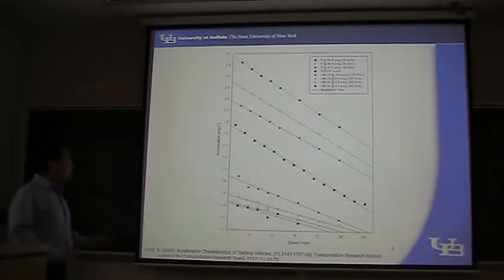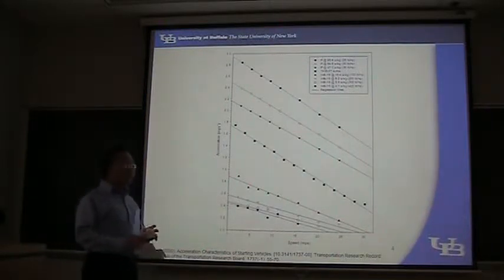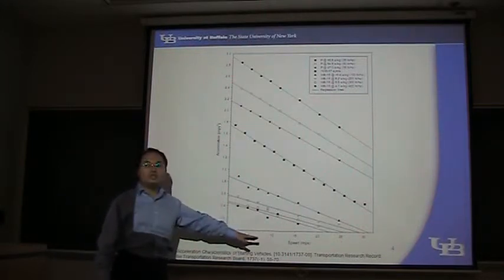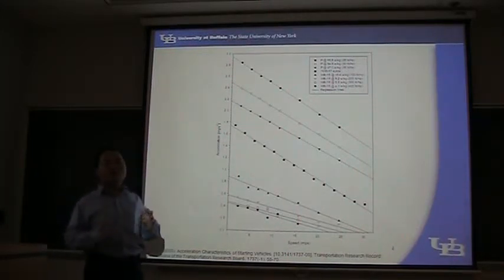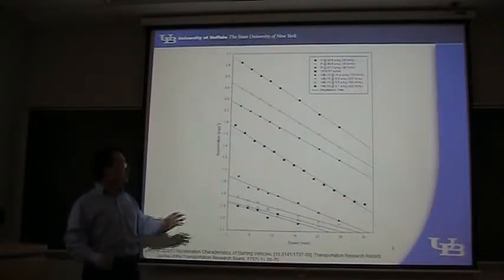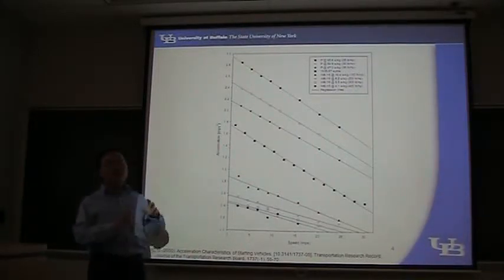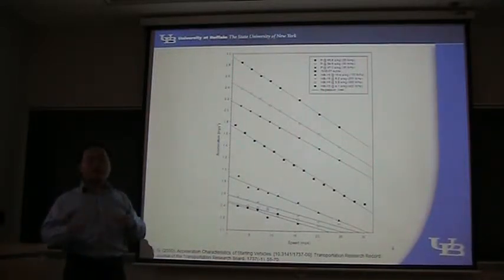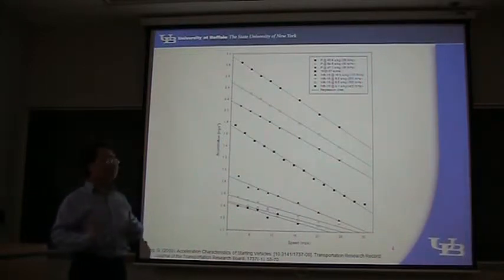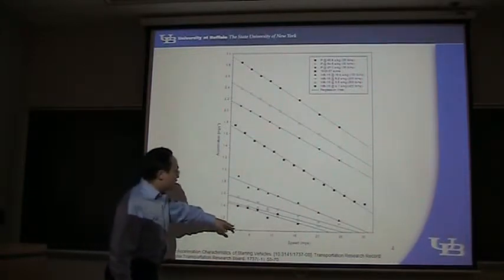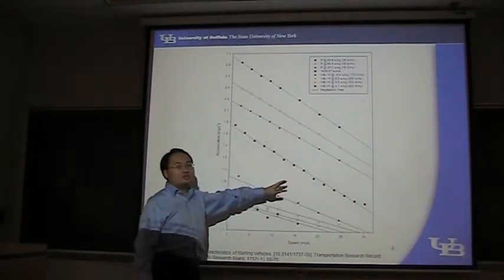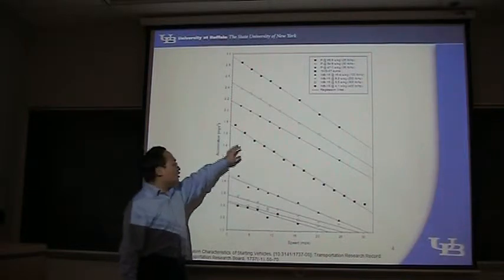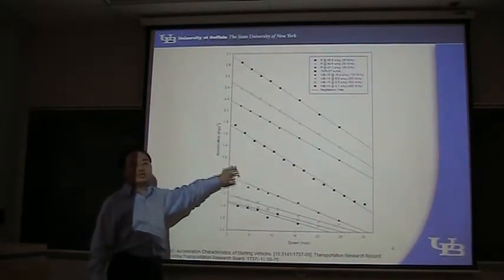In order to study car-following, we first have to know the relationship between the current travel speed and the maximum acceleration a vehicle can achieve. The maximum acceleration is limited by the vehicle's current speed — if you drive faster, your maximum acceleration will be lower. This figure shows that for different car types, as speed increases, the maximum acceleration decreases, and the relationship is linear. You can refer to this paper.